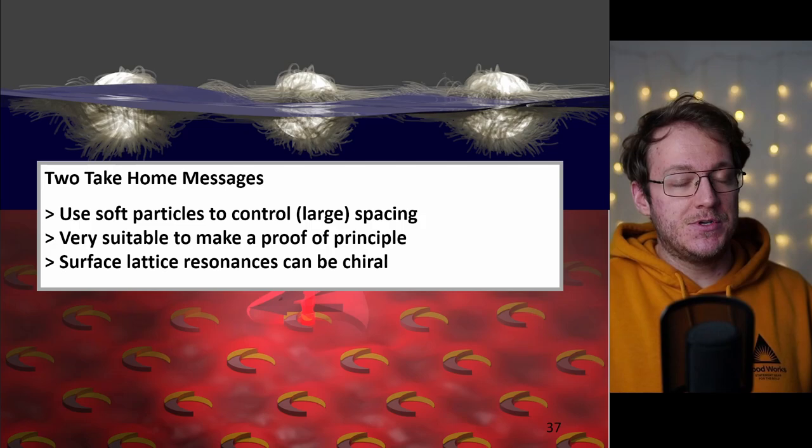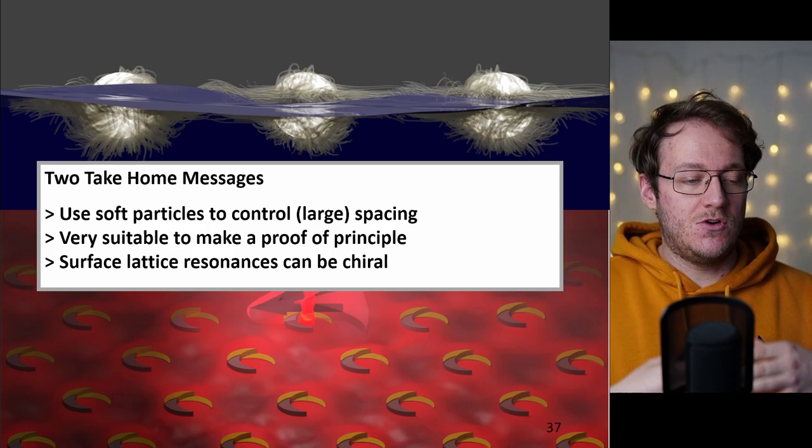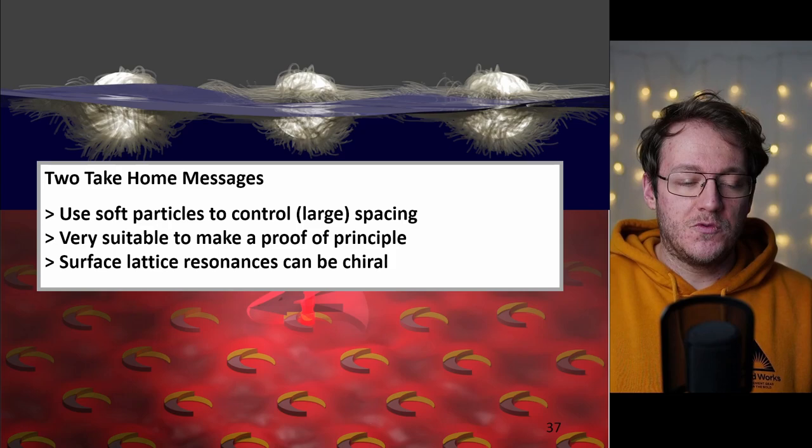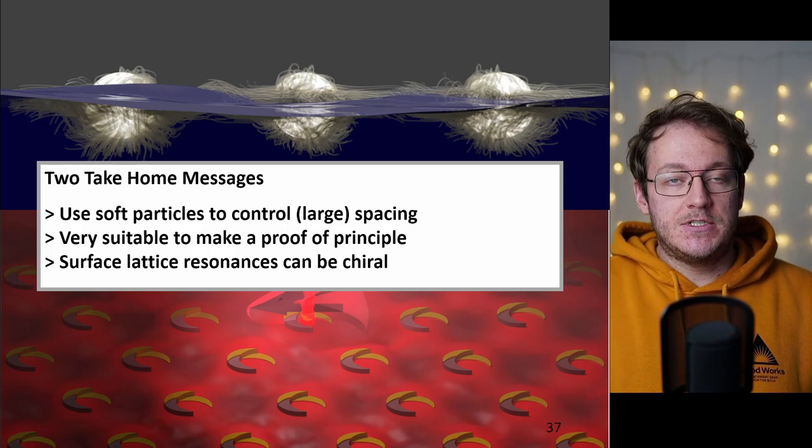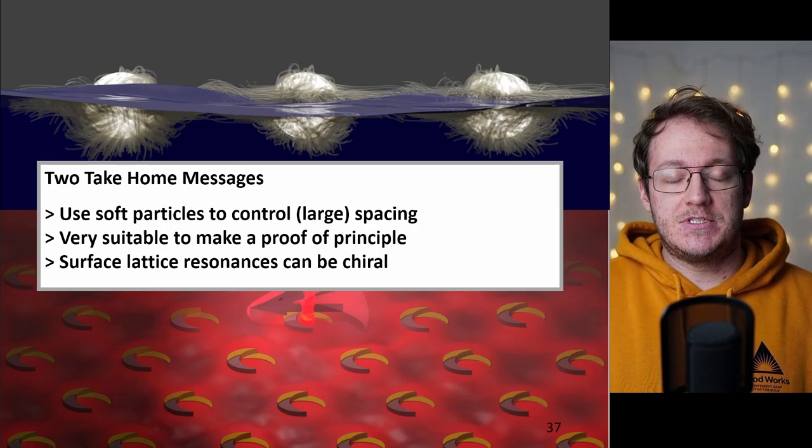So this leads me to the end. There's basically two take-home messages. First of all we can use soft colloidal particles and this assembly of them to produce very defined plasmonic structures also over large areas and in this case we use this for proof of principle experiment but there's also a lot of other things you can do with this, for example arrays of silicon nanowires. And then the second take-home message is that surface lattice resonances can indeed be chiral and not only in extrinsic chirality but also with intrinsic chirality.